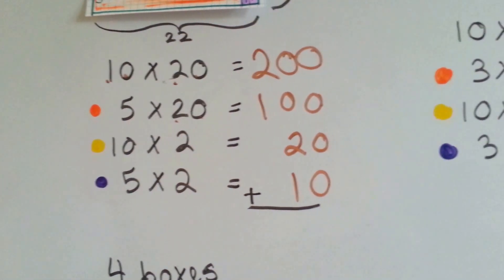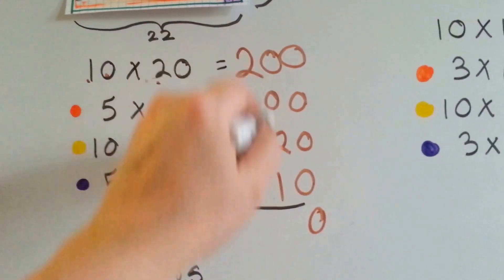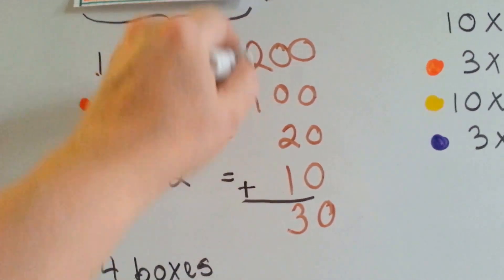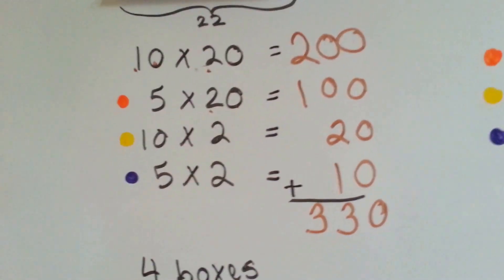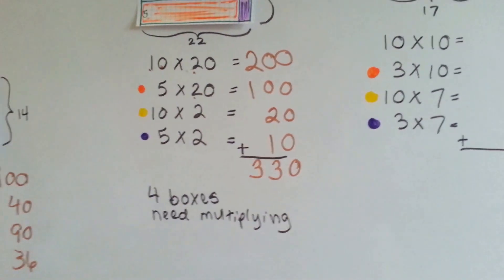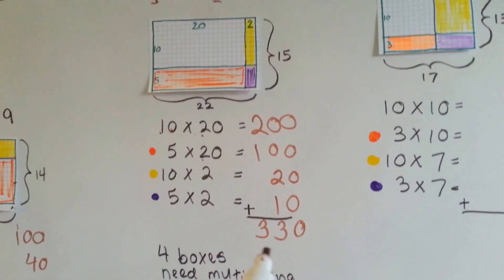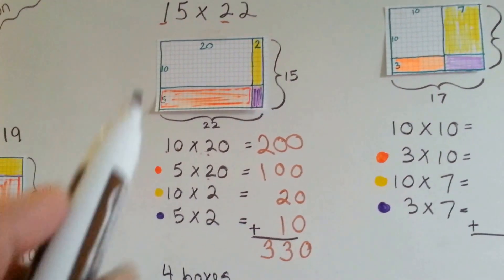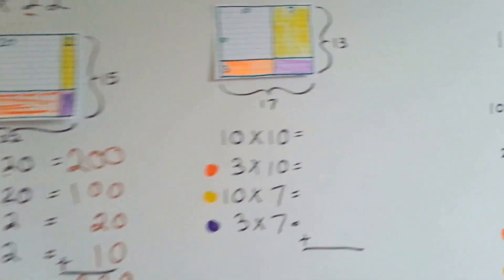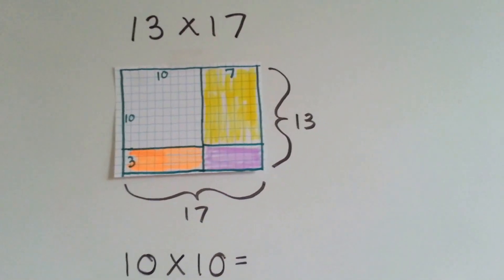Now we just need to add this up. 0, 3, and 3. So, the 4 boxes got multiplied. They totaled 330. So, 15 times 22 is 330. Let's try another one.